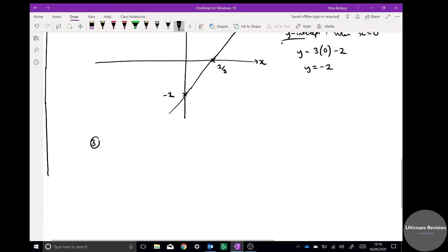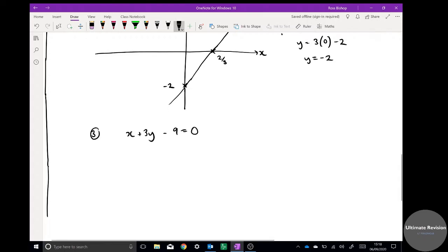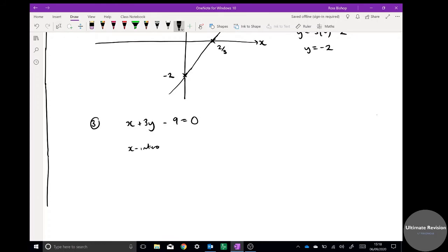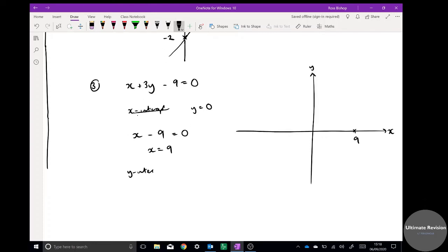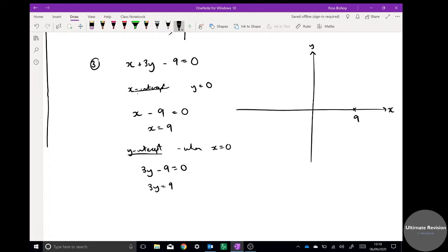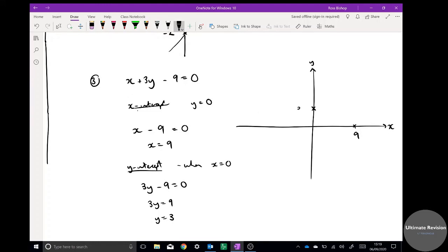Two more types of sketching. This is going to be x plus 3y minus 9 equals 0. Again, it's a linear graph, just written in a different format. Works exactly the same way. X-intercept: when y equals 0. If I put y equals 0 in here I get x minus 9 equals 0, x equals 9. So the x-intercept is 9. The y-intercept is when x equals 0. When x equals 0, I get 3y minus 9 equals 0 because the x disappears. Get 3y equals 9, y equals 3, so it crosses at 3 here.